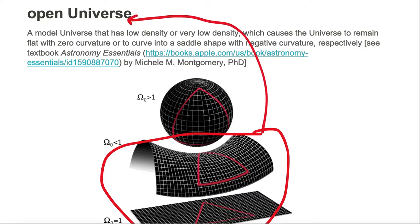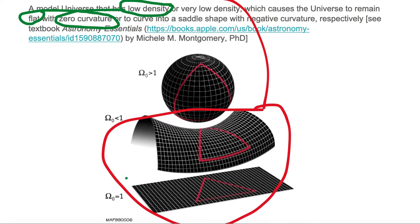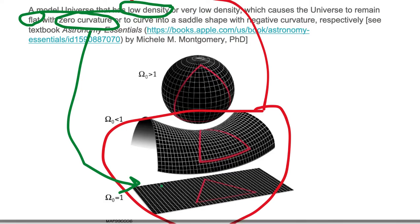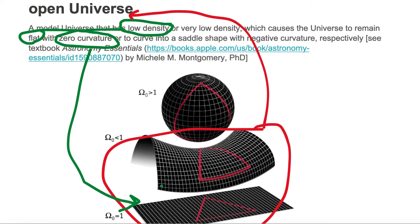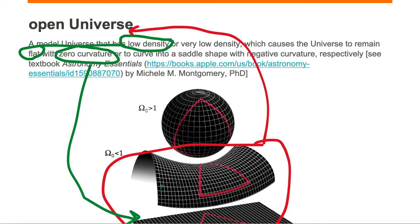One example of an open universe is one that has low density. Low density causes the universe to remain flat. A flat universe has zero curvature. The bottom example of a model universe is a flat shape and one example of an open universe.